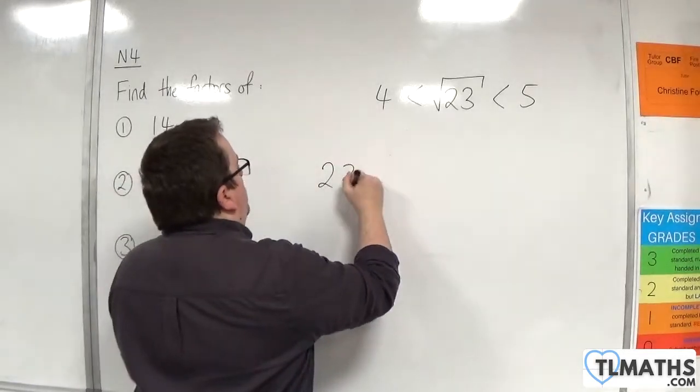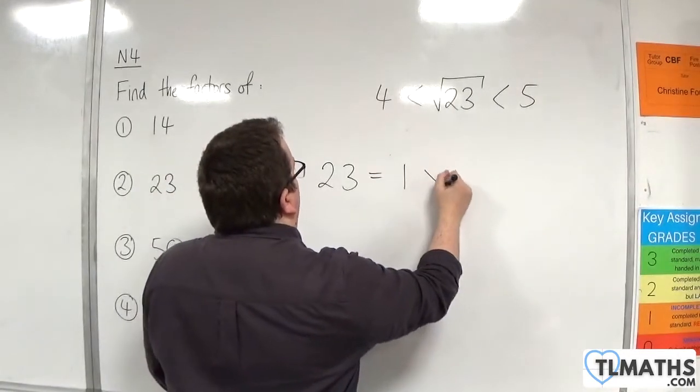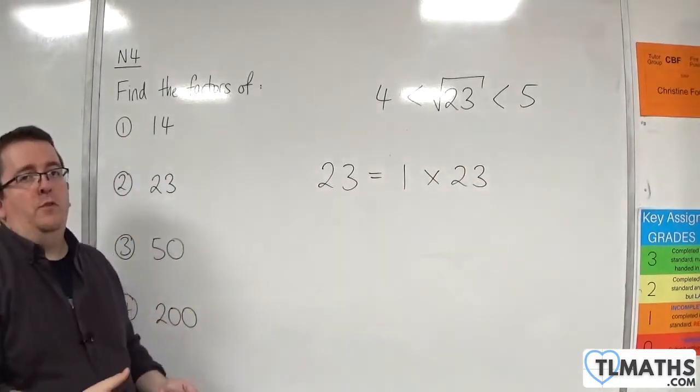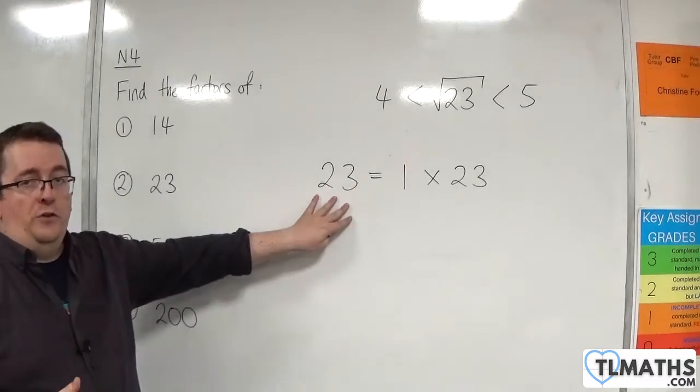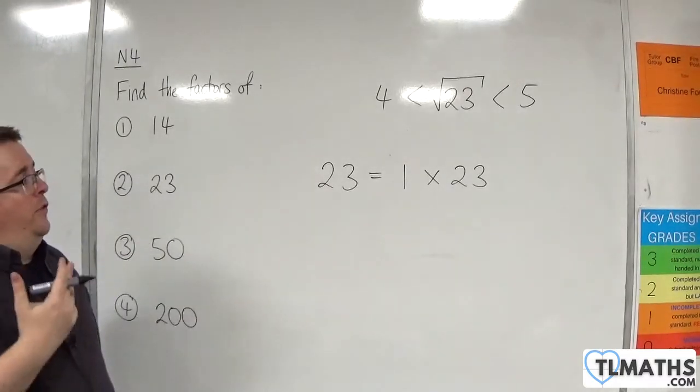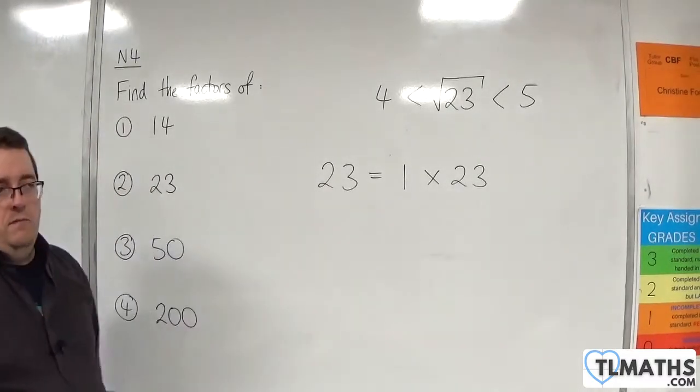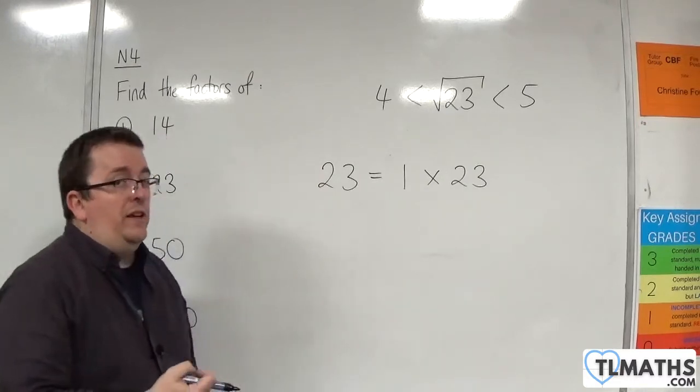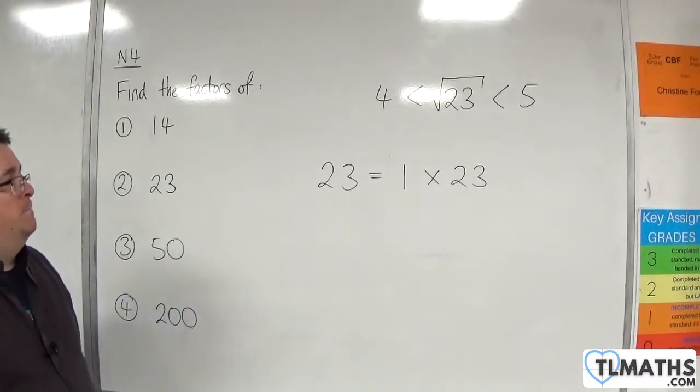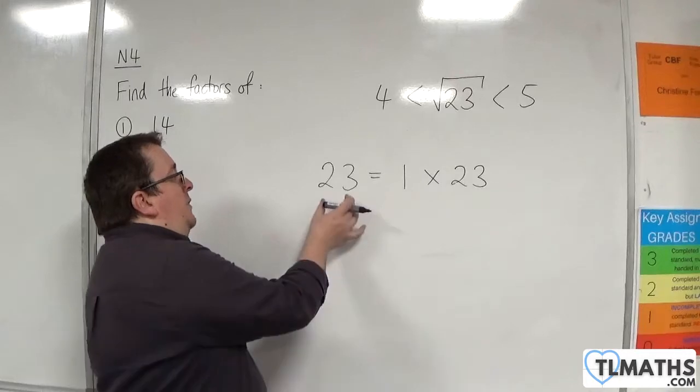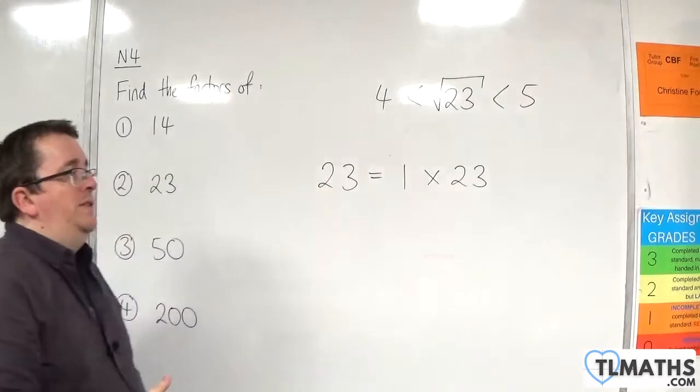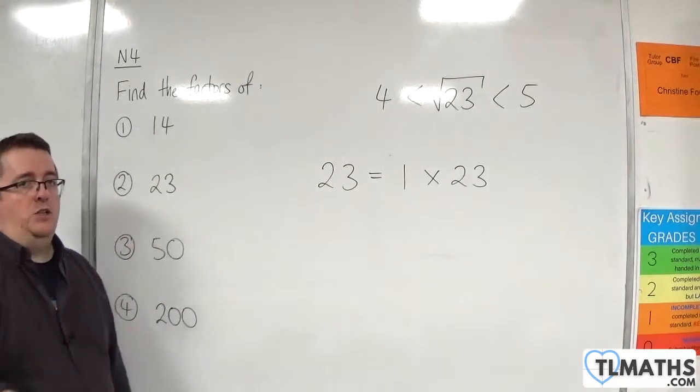So, 23 is 1 times 23. Now, 2 won't go into 23, because it's an odd number. 3 into 23? Well, 3 7s is 21, but 3 8s is 24. So, 3 doesn't go into 23. And 4 won't go into 23, because it's not even.